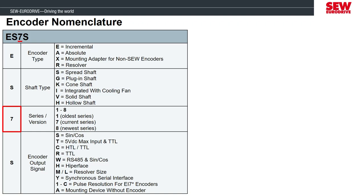The series number is important because it represents mechanical differences in the shaft design. For example, if you have an old DT motor and need to replace the encoder, you wouldn't be able to install a seven series encoder on the old motor. You would need to replace the encoder with the same series if it's still available, or replace the whole motor to use the new series. The last letter indicates the type of signal the encoder outputs, and some output signals are only possible with resolver or absolute encoders.